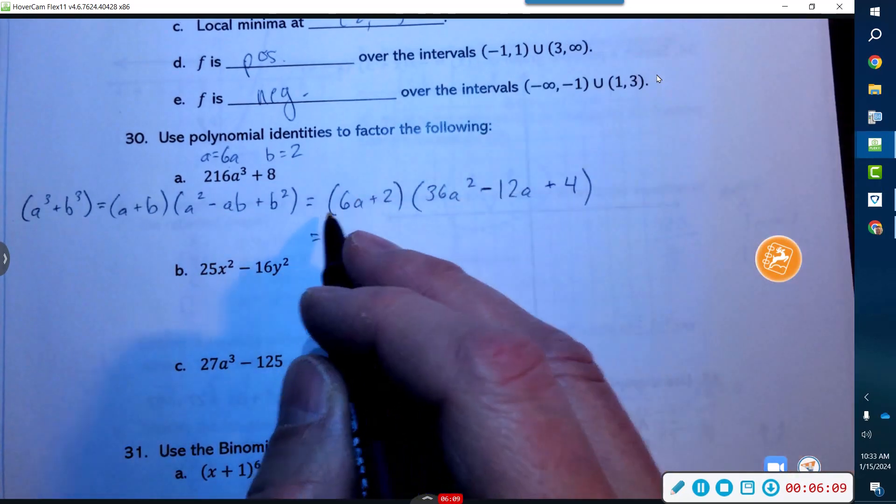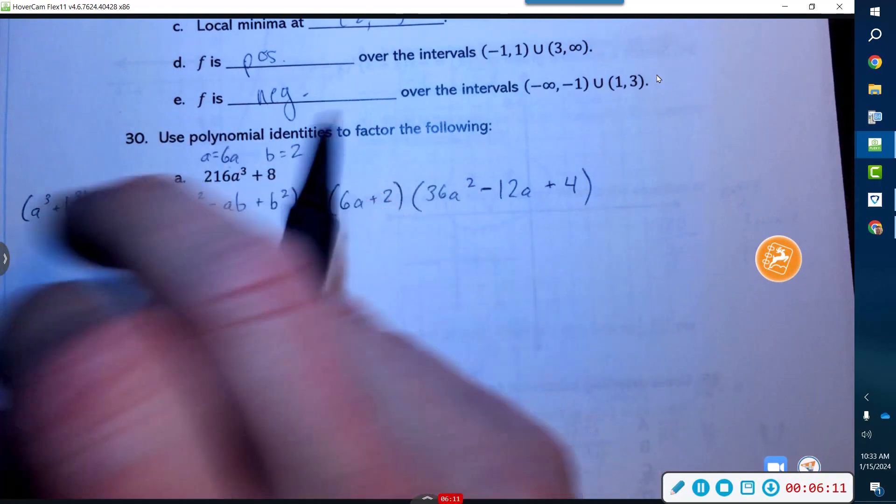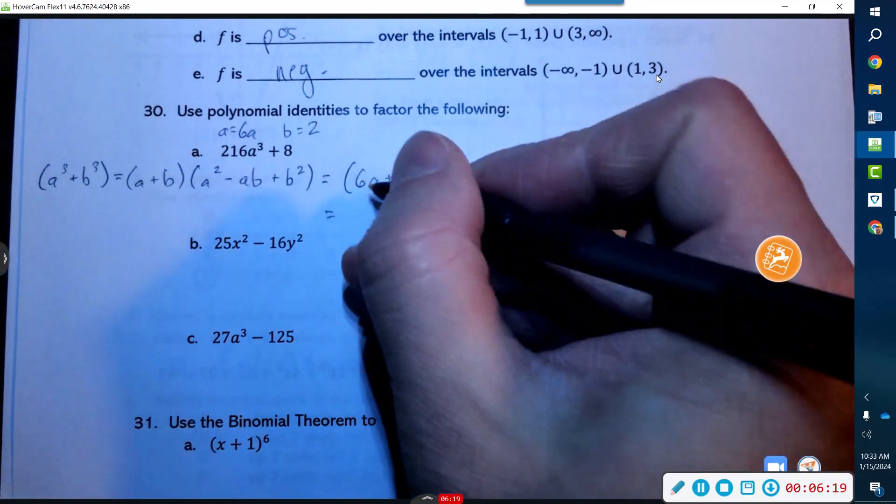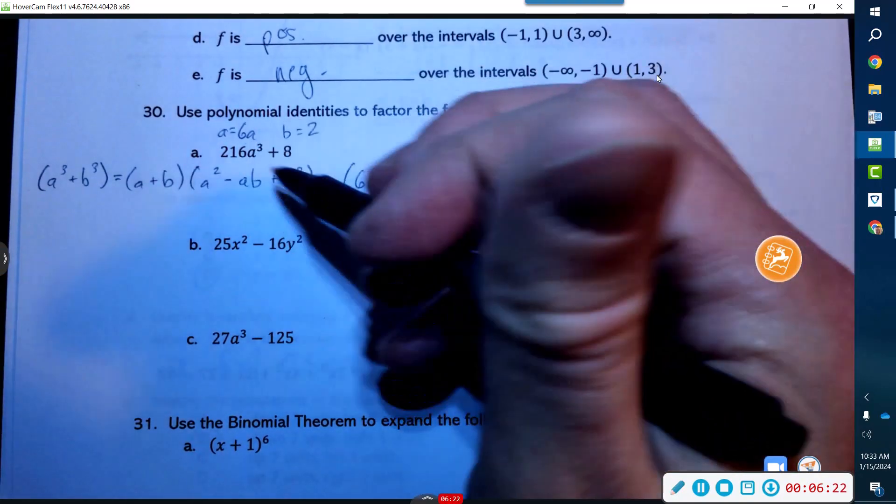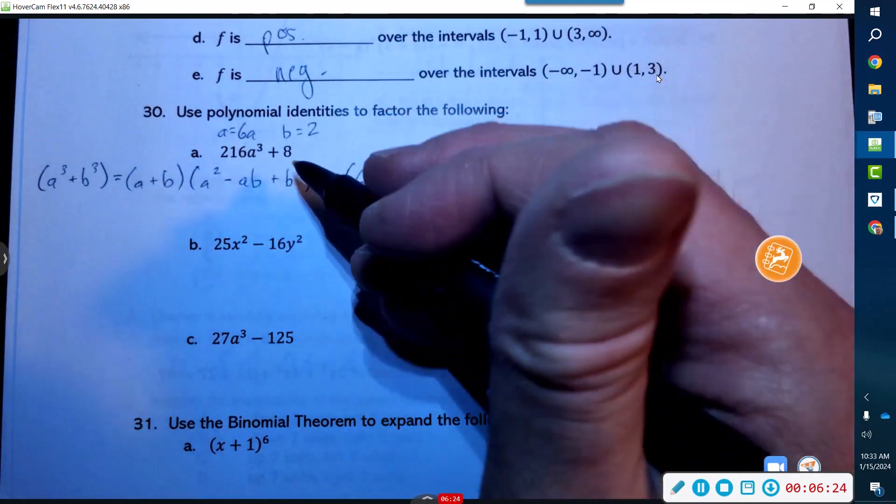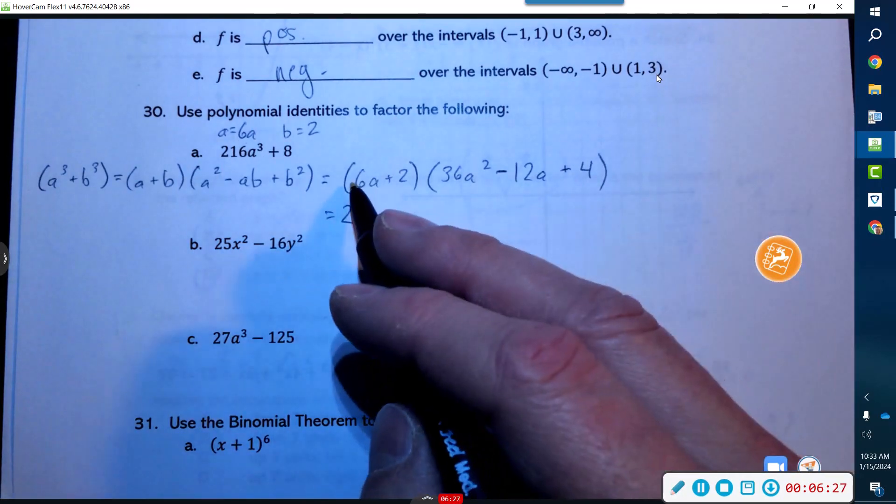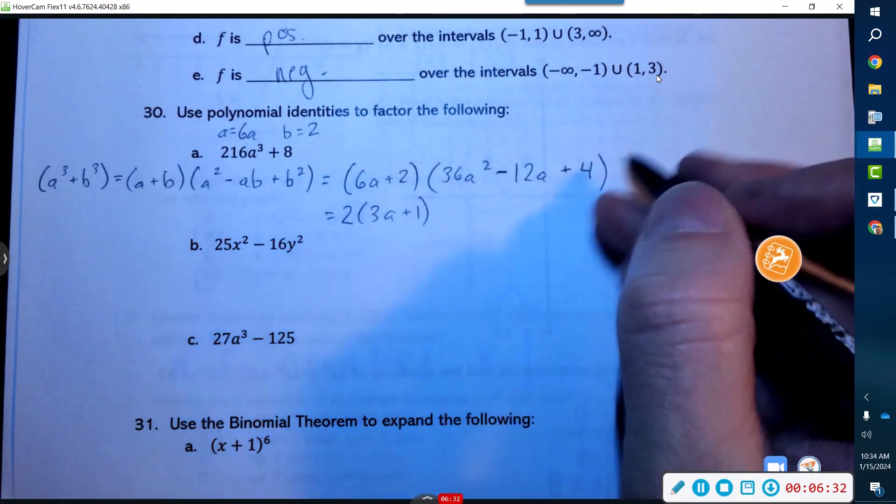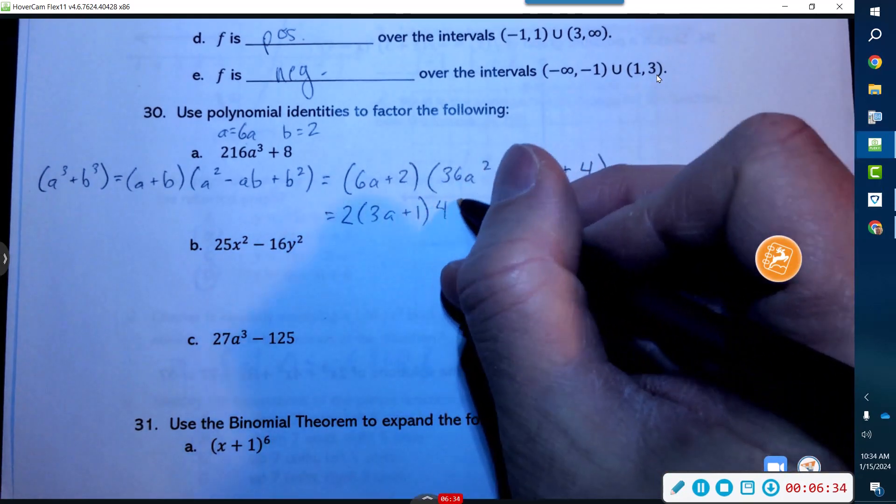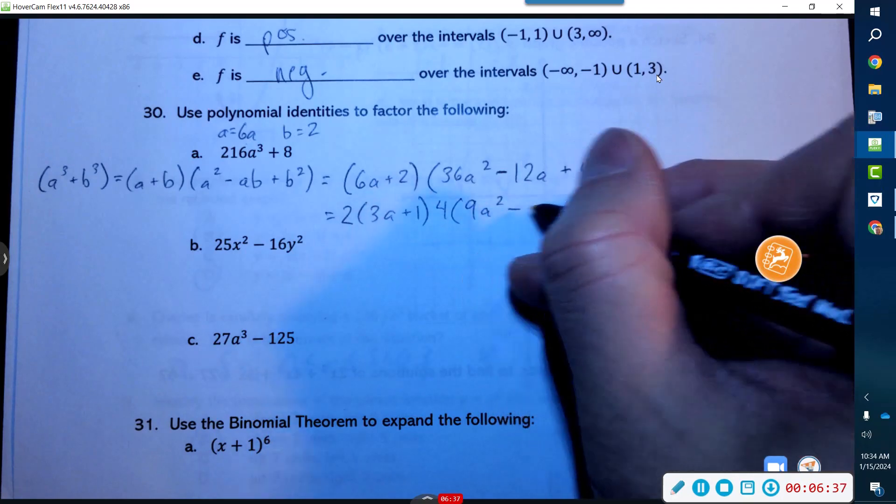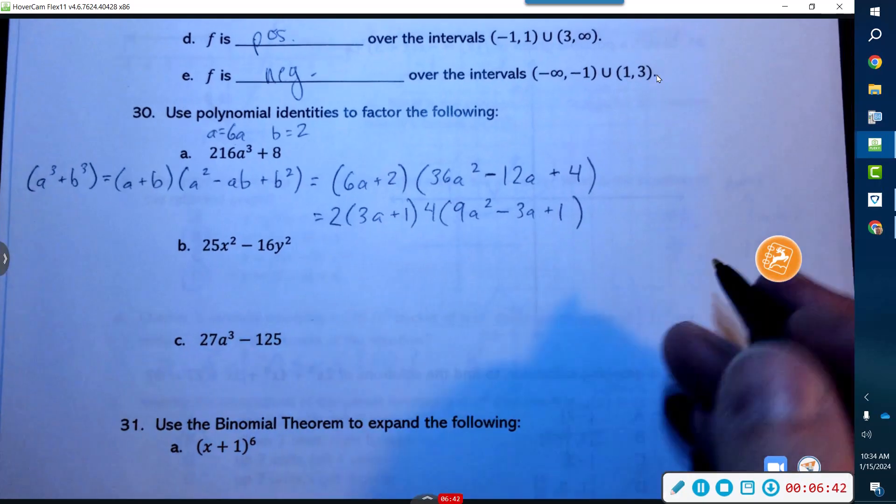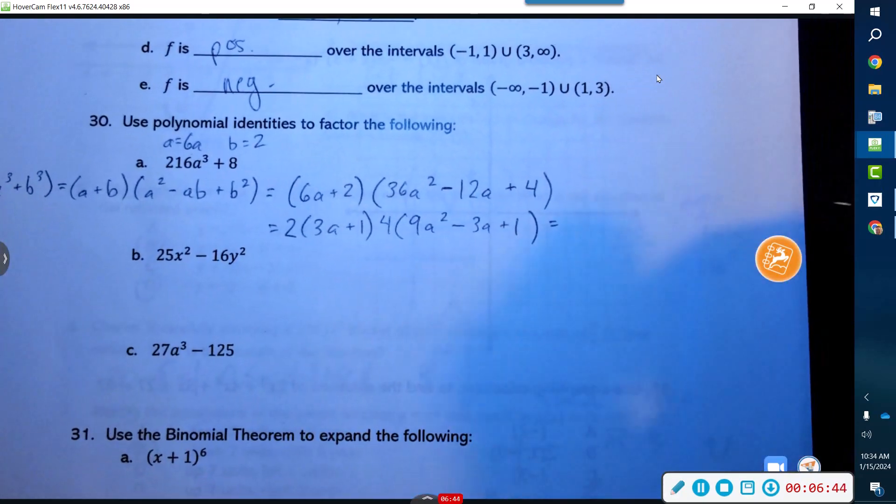So is this divisible by 8? I wonder if 216 is divisible by 8, because if it is—oh okay, so it looks like I can take out a 2 here. I didn't look for a GCF here. I should have, I should have looked for a GCF. So what would have happened is I take out a 2 here and I get 3a + 1, and then I'm going to take a 4 out of here and I get 9a² - 3a + 1.